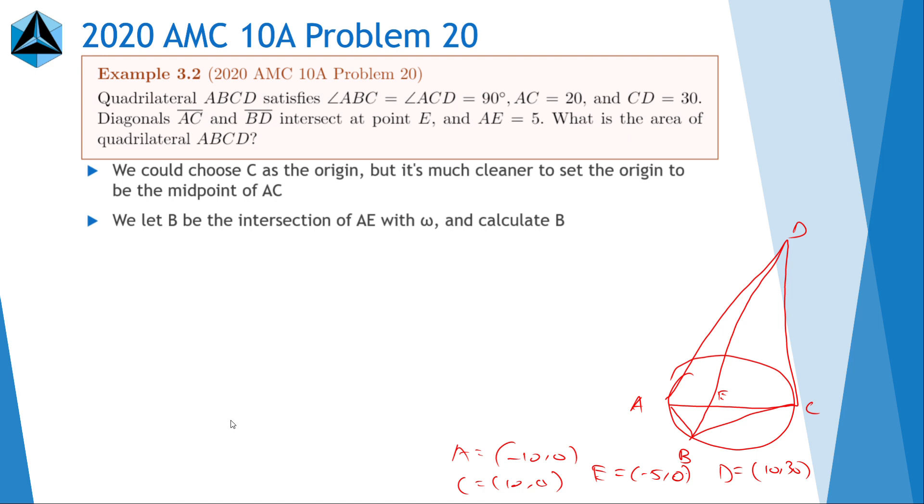So now we let B be the intersection of AE with the circumcircle of ABC. And then, in that way, since we know the circumcircle of ABC is centered at the origin and has radius 10, then the circumcircle of ABC is just X squared plus Y squared equals 100, which means we can calculate the coordinates of B by calculating line DE and then calculating the intersection with some basic algebra.